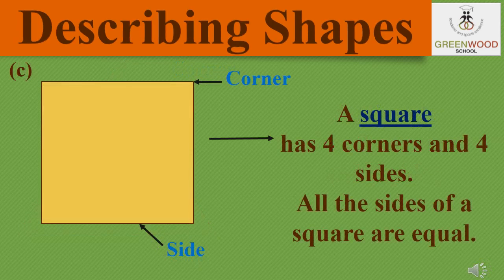The third shape is square. A square is made of four corners and four sides. As you can see in the picture, all the sides of a square are equal in size.